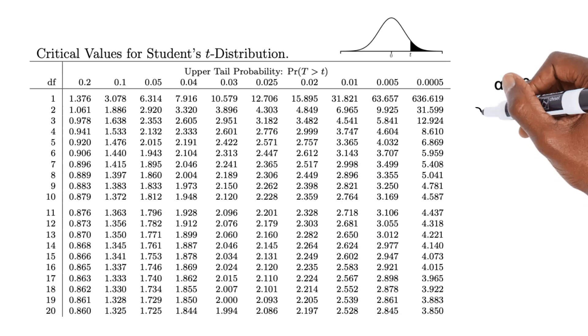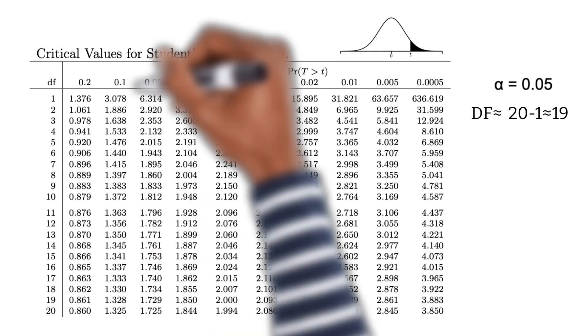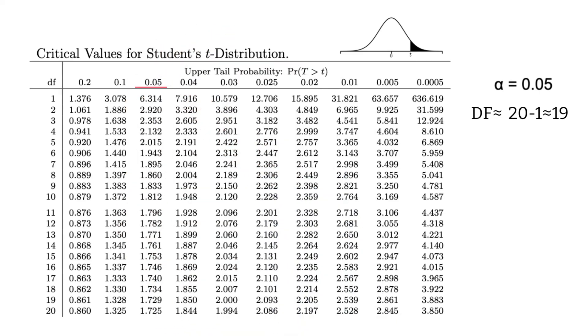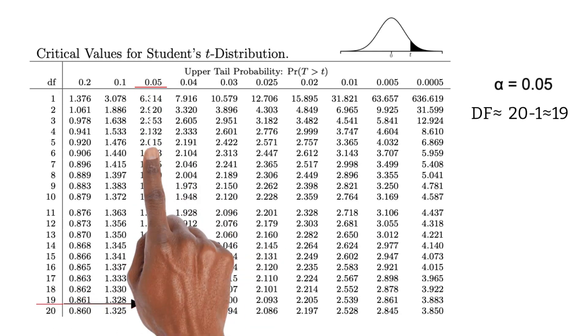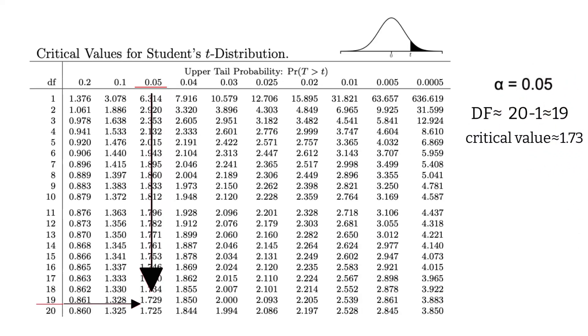To find an approximation of our degrees of freedom, we subtract 1 from the sample size, 20 minus 1, and we get 19. In a video linked below, I demonstrate how to find the exact degrees of freedom using the TI-84 or the Calculate84 app. But for now, this approximation will work for our purposes. To find the critical t-value for our right-tailed test, we look at our selected significance level of 0.05 at the top of the table, and we look for our degrees of freedom of 19 on the side of the table. The critical t-value in that row and that column is approximately 1.73.